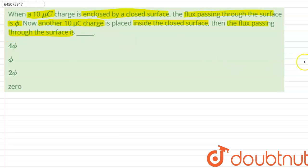So the question is saying that when initially only 10 micro coulomb charge is present in a closed surface, the flux is phi. Now another 10 micro coulomb charge is added to the initial charge. Then what is the new flux passing through the surface?